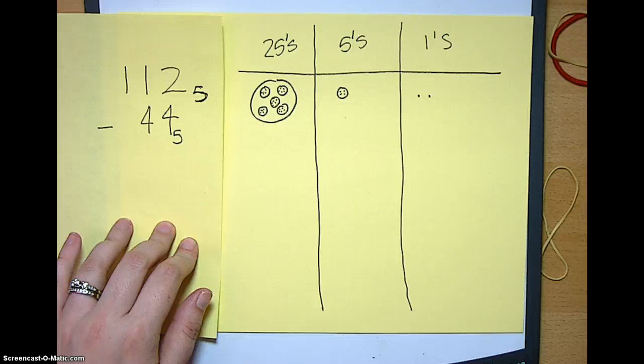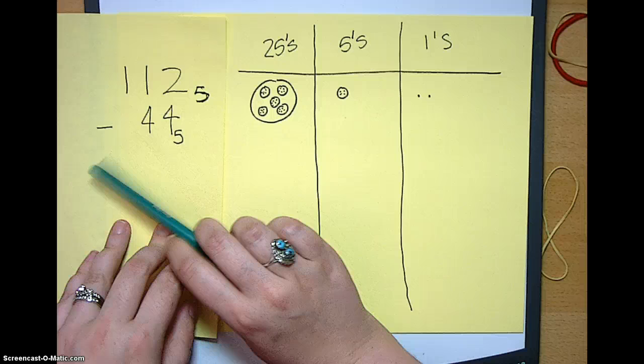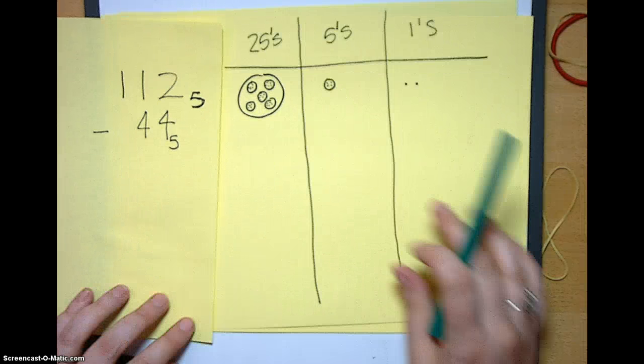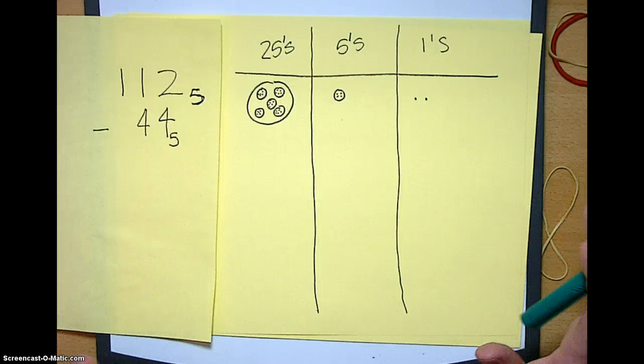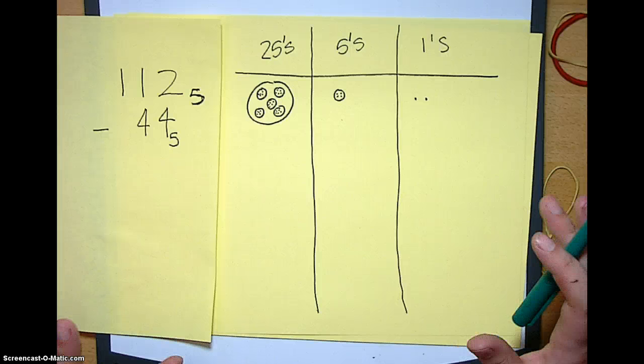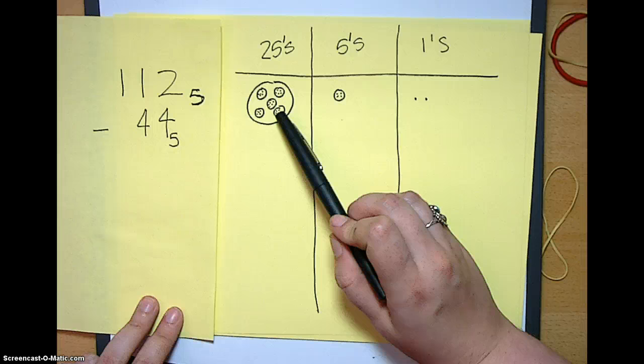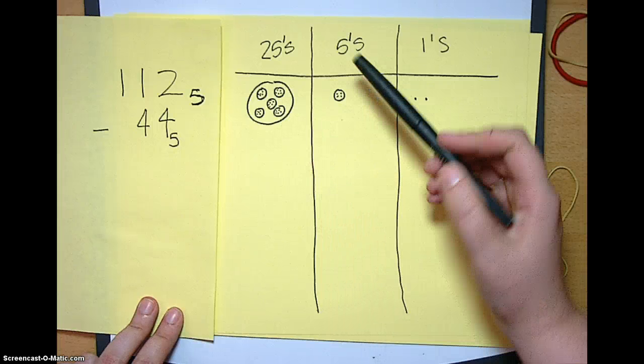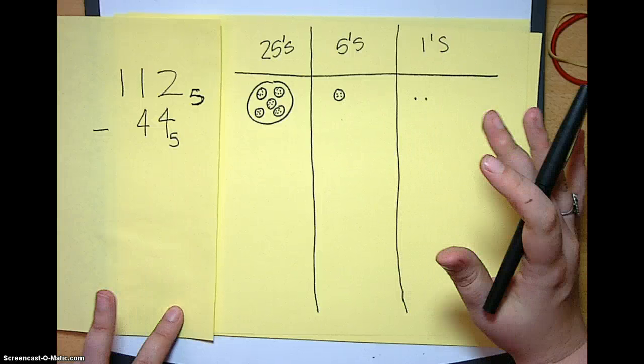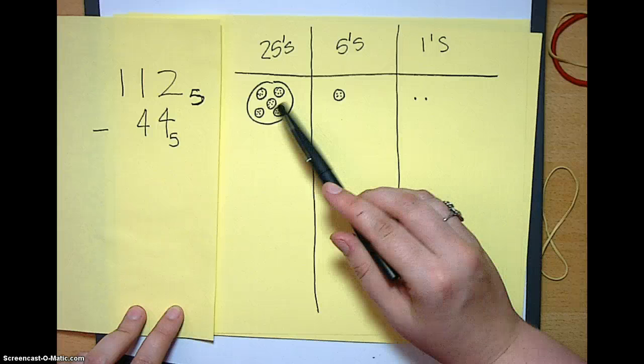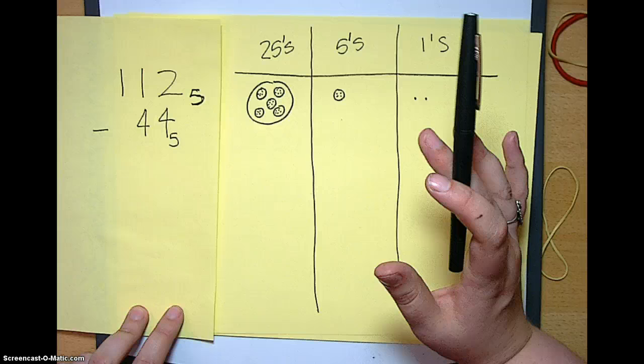Okay. 1, 2 base 5 minus 4, 4 base 5. And as you can see, I've already set up the way I like to do this. Some of you guys might find this helpful. I like to do it in the chart. And when you set this up, you can see we have our 1, 25, our 1, 5, and our 2, 1s. Now when you set it up, you have to make sure that you have all your little dots. I know it's a big pain in the butt, but if you don't, then it's not bundling. You have to have the little dots.